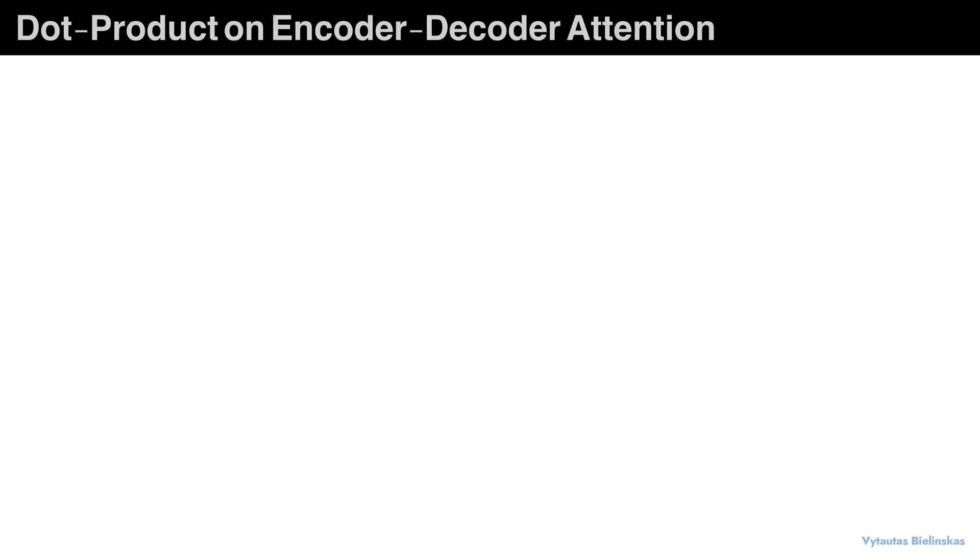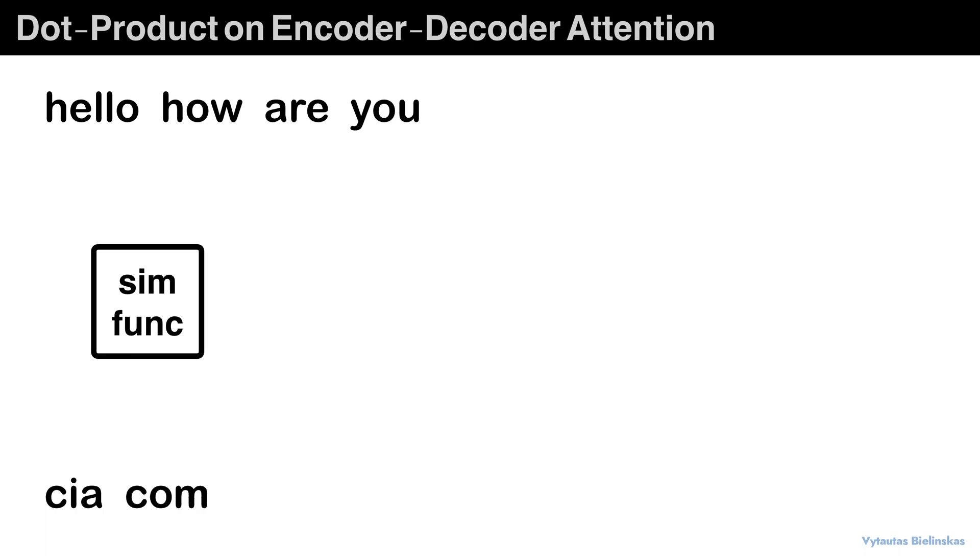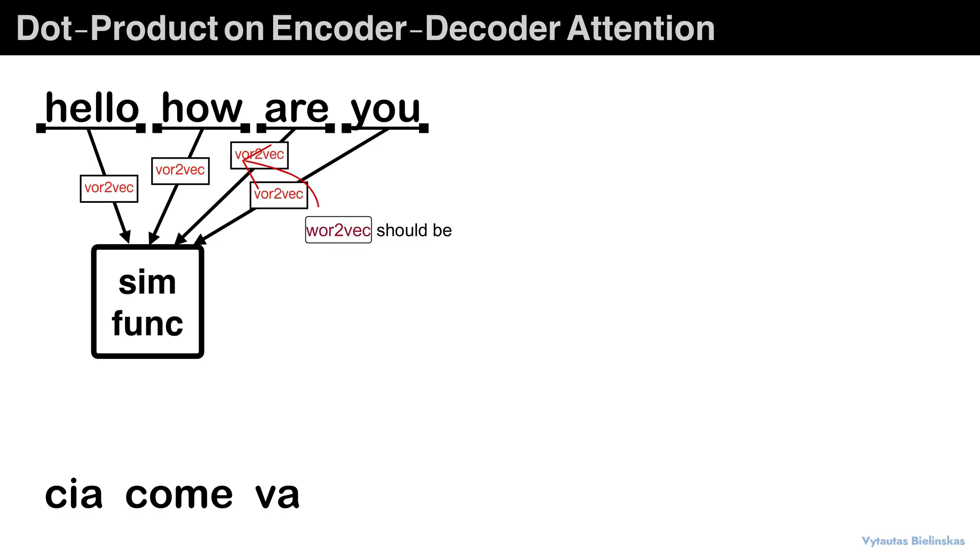For now in this video we will try to understand what actually makes the encoder-decoder attention work. The first attention mechanism that we will focus on is the dot product or encoder-decoder attention. When we perform a lot of tasks we would typically convert a word to a vector, that is word to vec.